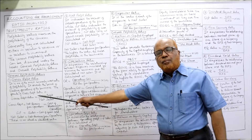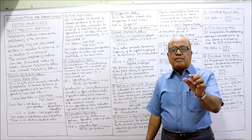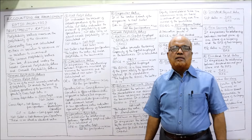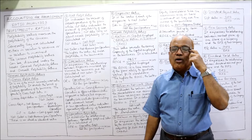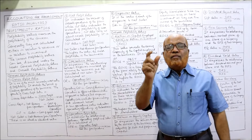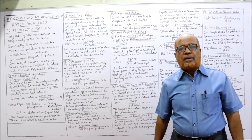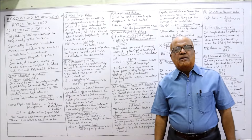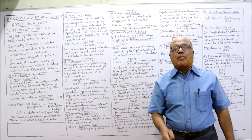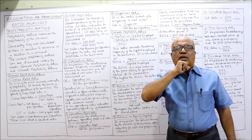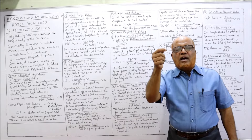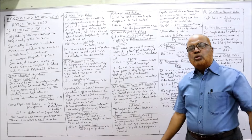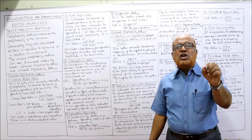The fourth and final general profitability ratio is the expenses ratio. In this ratio, we calculate the ratio of every individual expense to net sales or revenue from operations. For example: salaries divided by revenue from operations into 100 gives the salary expense ratio. Similarly, rent divided by revenue from operations into 100. Every expense is taken in the numerator and revenue from operations in the denominator. In total, five general profitability ratios have been explained.